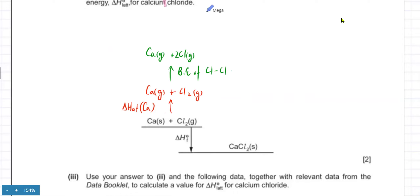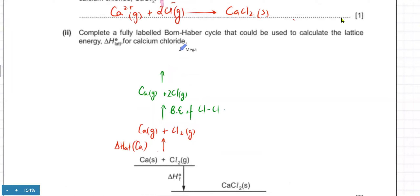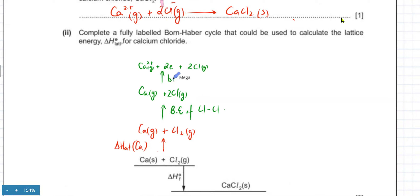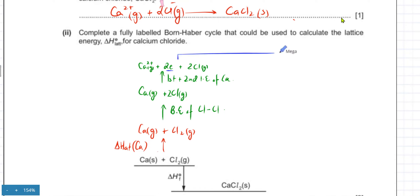Then you ionize them — and these are all endothermic processes, which is why the arrow is going up. If you ionize them, calcium loses two electrons to form Ca²⁺, and two electrons are lost. You have two Cl gaseous atoms remaining. That accounts for the first plus second ionization energy of Ca.